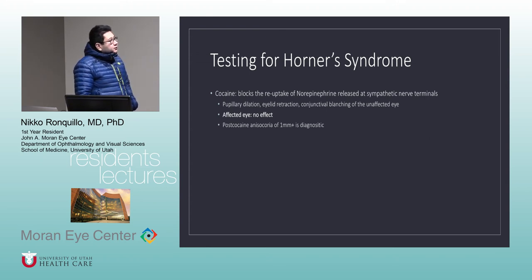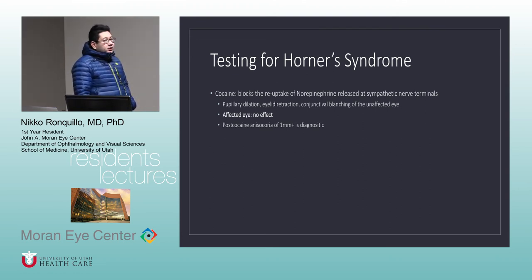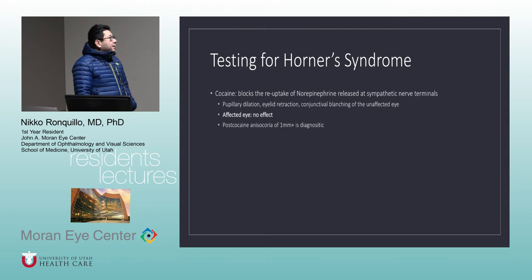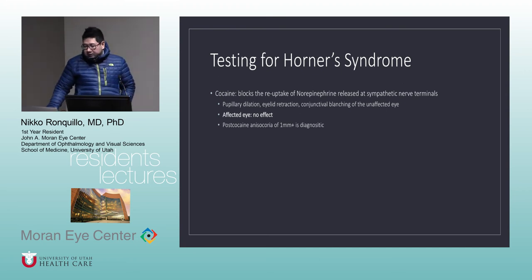The first test is cocaine, which blocks reuptake of norepinephrine at synaptic nerve terminals. It causes pupillary dilation, eyelid retraction, and conjunctival blanching in the unaffected eye, but in the affected eye there is no effect. Post-cocaine anisocoria of greater than 1 millimeter is diagnostic of Horner's. Remember: after cocaine, there is no change in anisocoria in the affected eye.